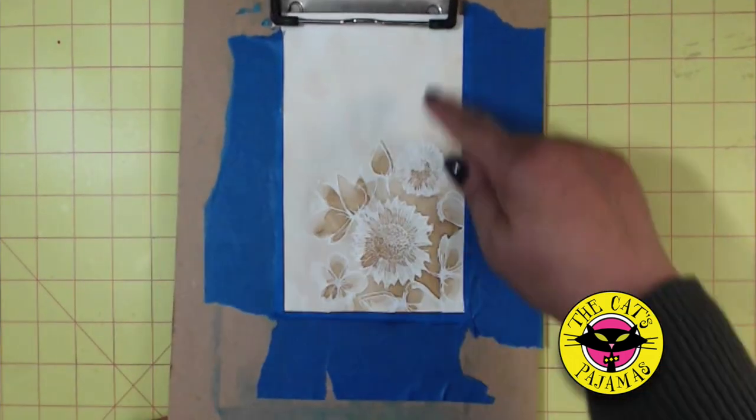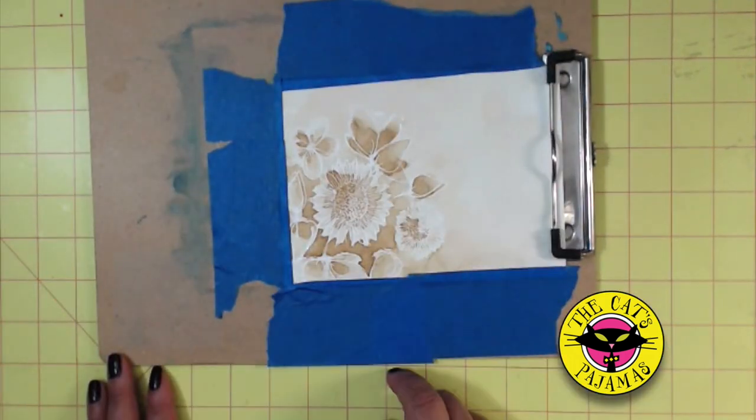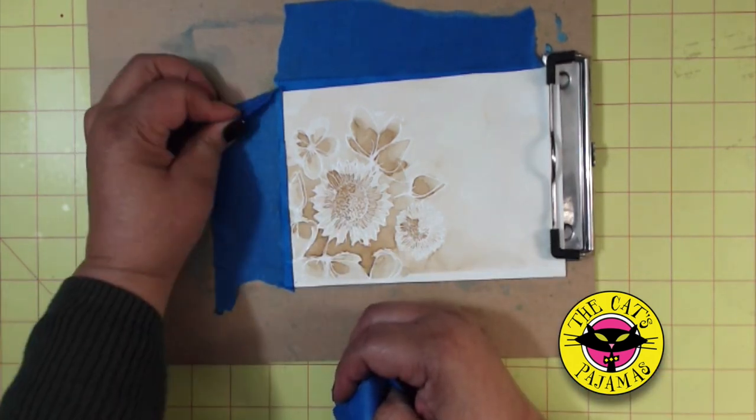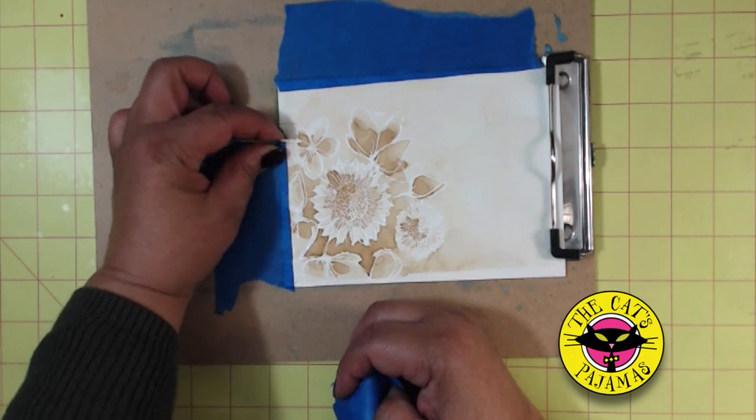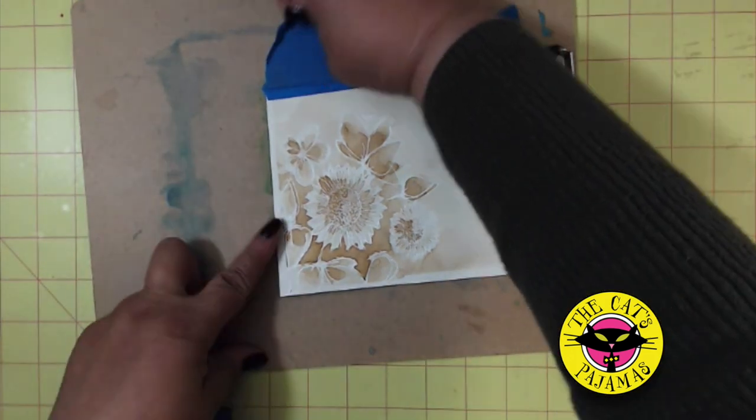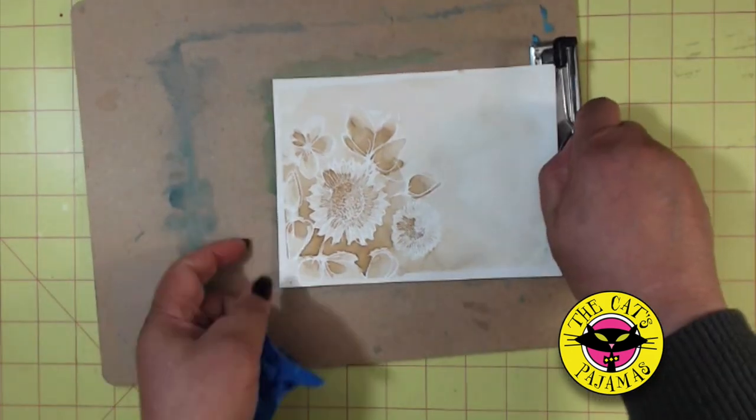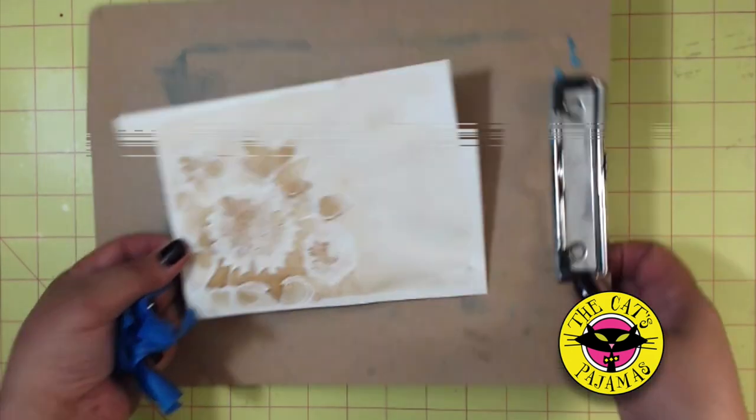Now here's the dried card. When I was designing this card in my head, I thought it would look great as a vertical, but now that I see it, I think it would look even better as a horizontal card. So I'll just trim the front of the card to four and a quarter by five and a half.